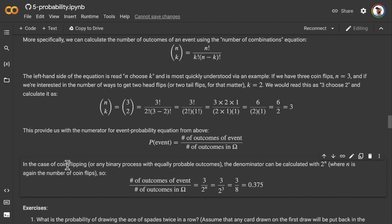Well, in the case of coin flipping or any binary process with equally probable outcomes, the denominator can be calculated with 2 to the power of n, where n is again the number of coin flips. So 2 to the power of n, 2 to the power of 3 equals 8. So now we have 3 over 8, which equals 0.375.